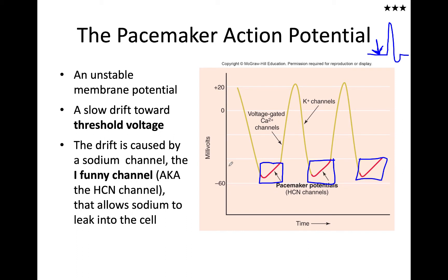Pacemaker cells start at approximately minus 60 millivolts — that's the lowest point they reach. We're going to use minus 60 as our ballpark number. From minus 60, they drift up to approximately minus 40 or minus 35; minus 40 is a good ballpark number for the threshold.